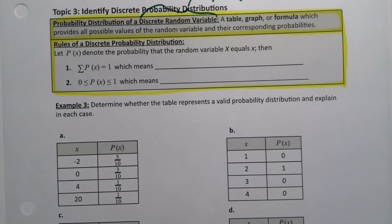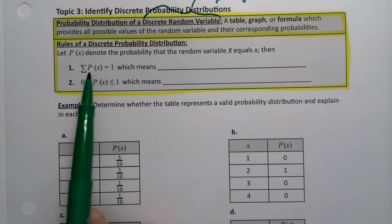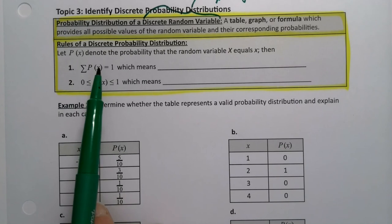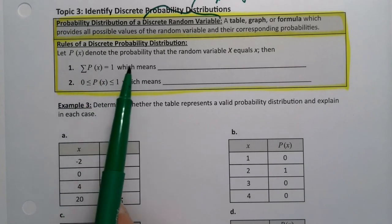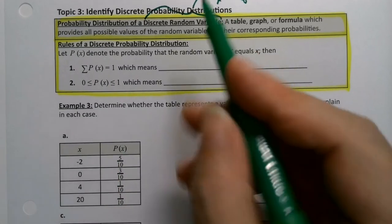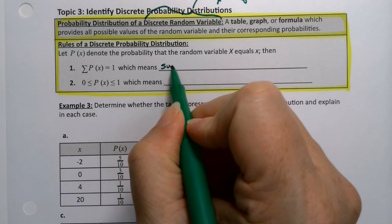These rules we already learned, but they're written in math speak with symbols. This one's saying the sum of all the probabilities must be one, right? Sum of all the probabilities in the sample space.